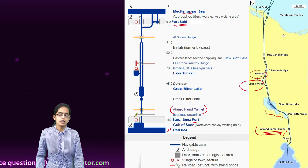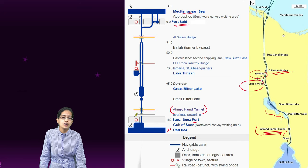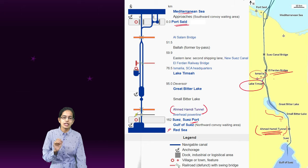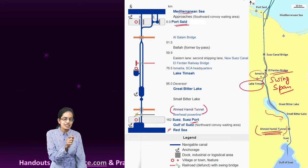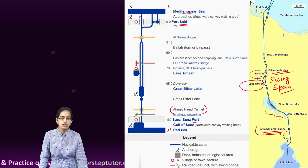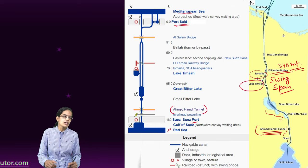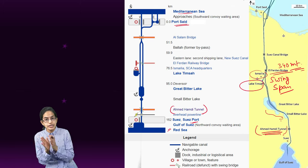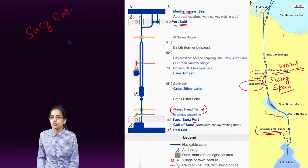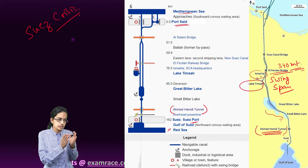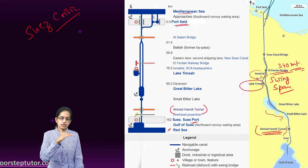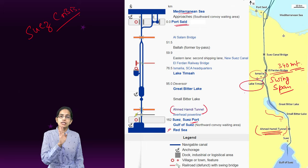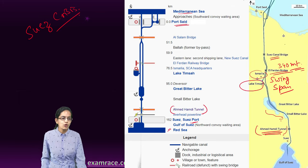North of the Great Bitter Lake we have Lake Timsah, and north of Timsah is Ismailia, one of the major towns. Here we have the Al-Ferdan Bridge, which is a very important swing span bridge — one of the longest swing span bridges in the world with a span of nearly 340 meters. This was previously destroyed during the Suez Crisis, which was also known as the Second Arab-Israel conflict, and later the bridge was brought back into action, though as of now Al-Ferdan Bridge is not functional.